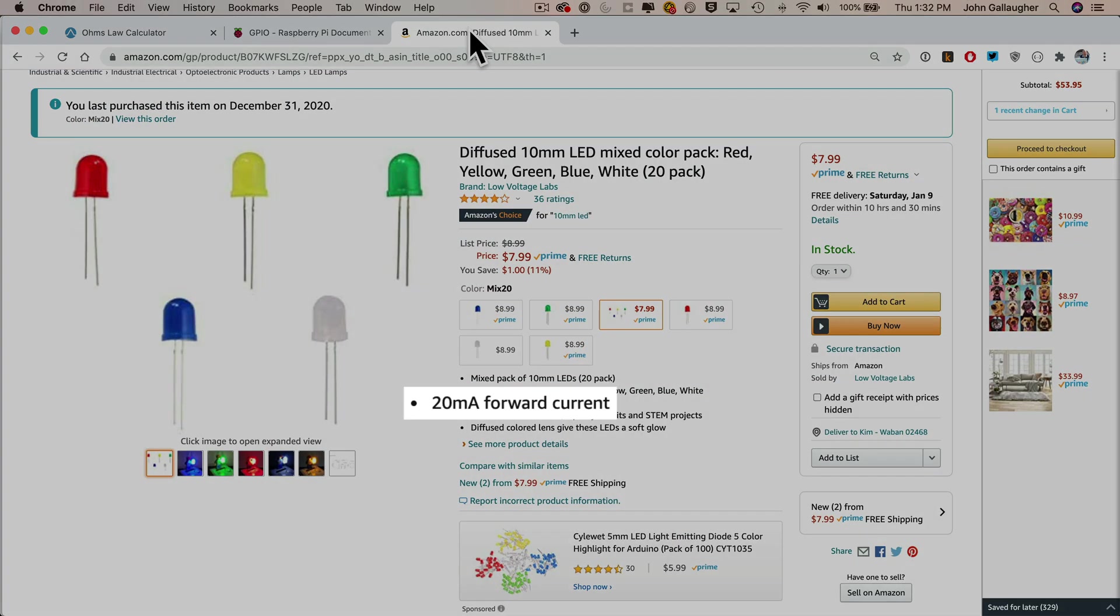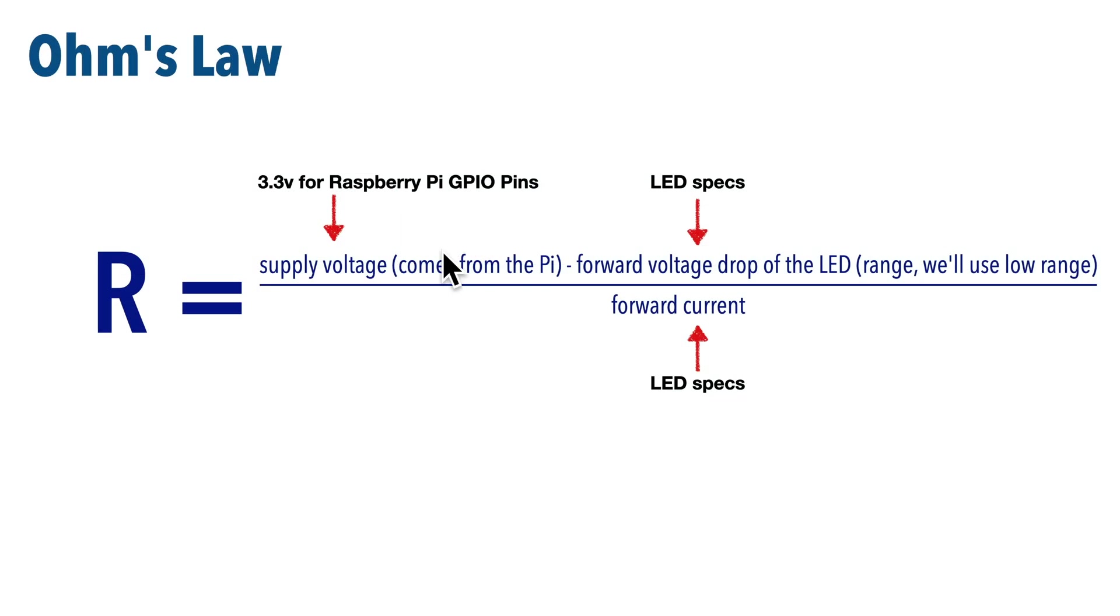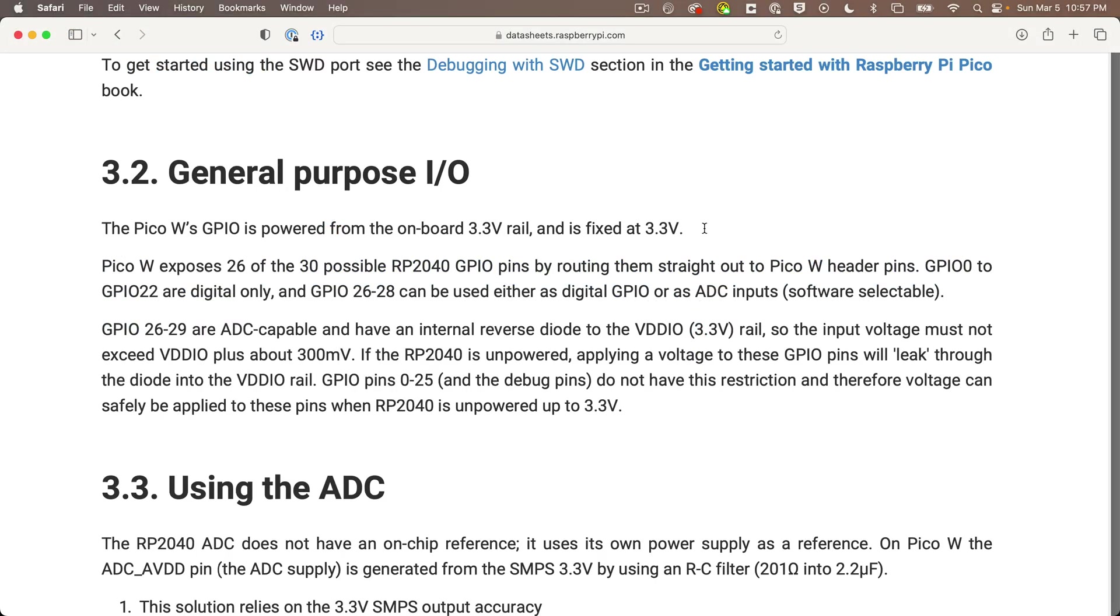And we see right here, it says that this product has a 20 milliamp forward current. So let's return to the calculator. And for current, I'll put in 20 and then select milliamps instead of amps so that I don't have to divide by 1000. Now remember, we said that the voltage was going to be a subtraction that starts with the voltage supplied by the Pico over the digital IO pins.